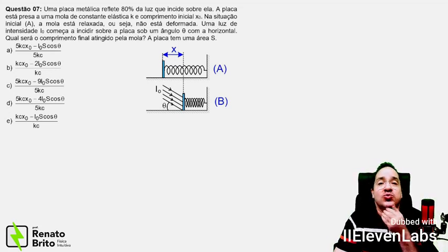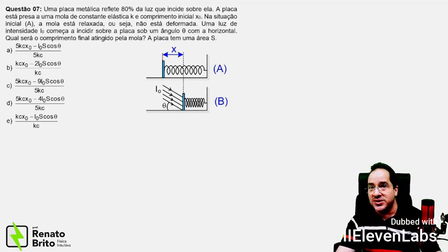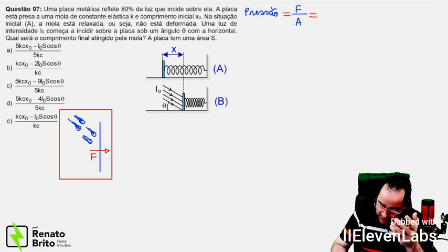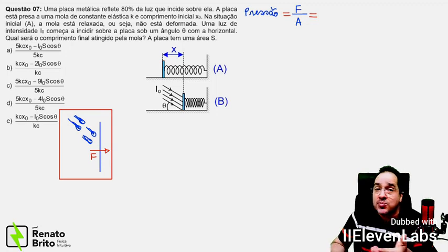Now, see, this question makes use of the concept of radiation pressure. So let's review this concept. Imagine a beam of light that is a beam of photons, which will strike a wall and then end up applying a force F on this wall due to the collisions of the photons.